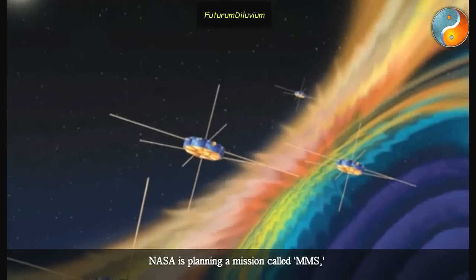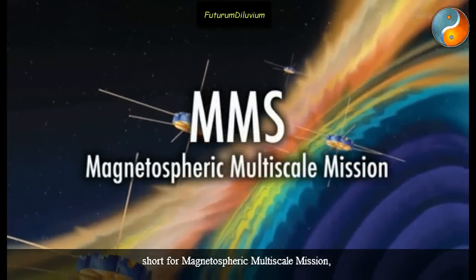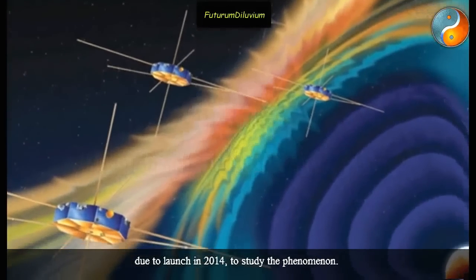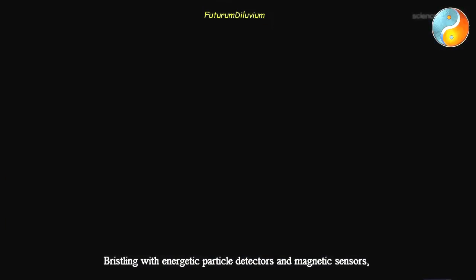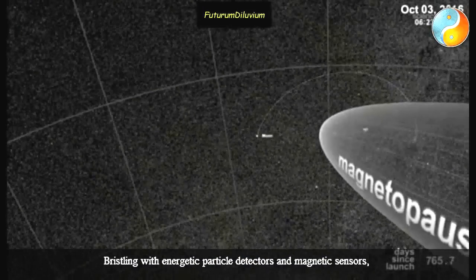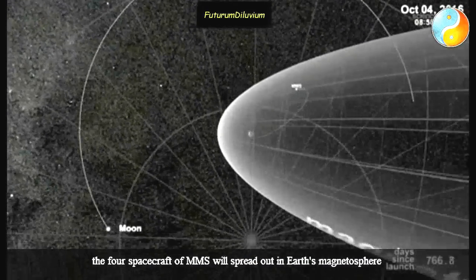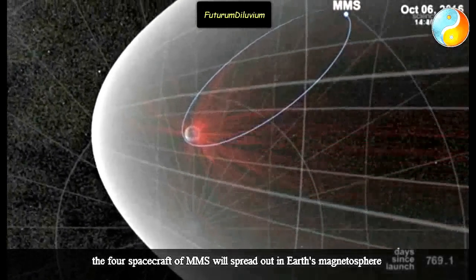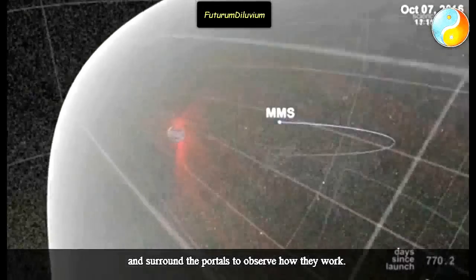NASA is planning a mission called MMS, short for Magnetospheric Multiscale Mission, due to launch in 2014 to study the phenomenon. Bristling with energetic particle detectors and magnetic sensors, the four spacecraft of MMS will spread out in Earth's magnetosphere and surround the portals to observe how they work.